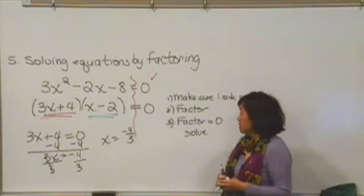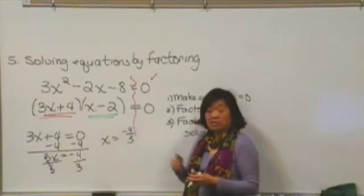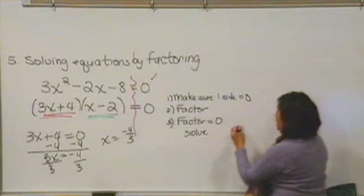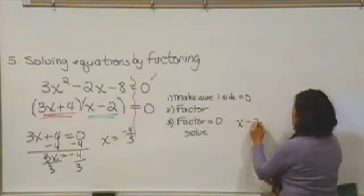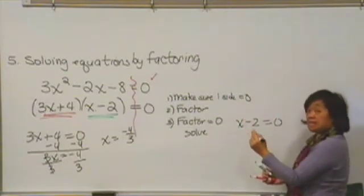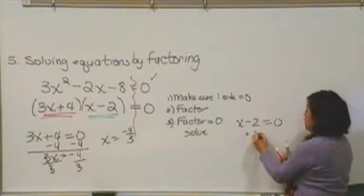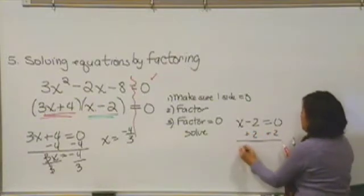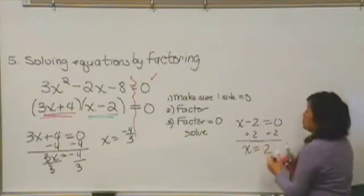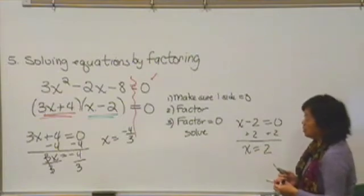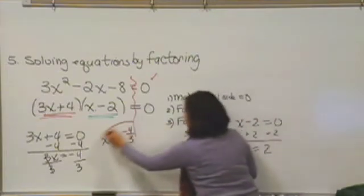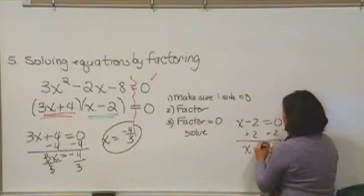That's the red factor. Now I'm going to take the green factor and do the same thing. x minus 2 is equal to zero. This one's slightly easier to solve. I'll just add 2 to both sides. So x is equal to 2. So my solutions to this equation are x equals negative 4 thirds and x equals 2.